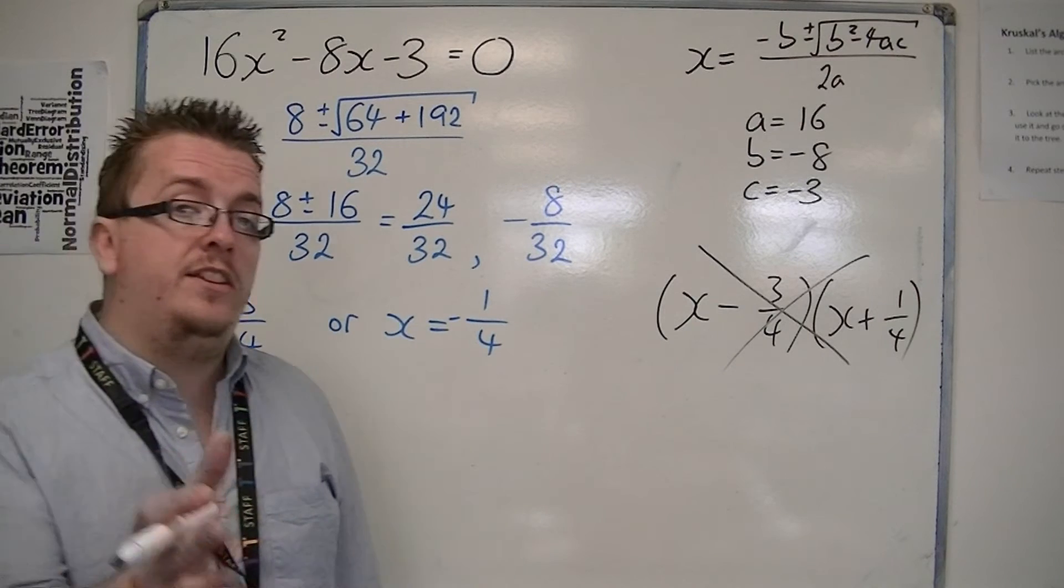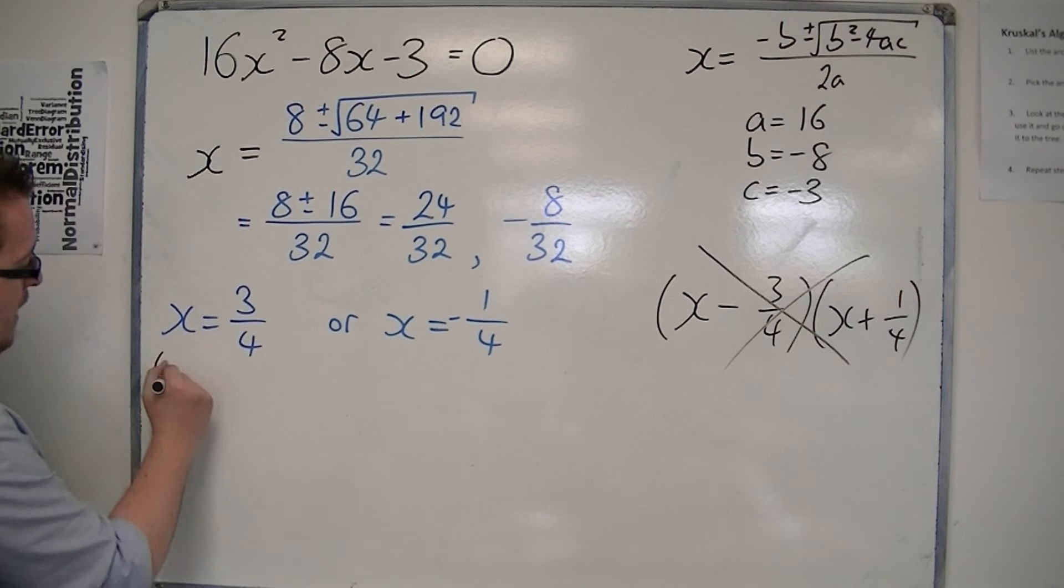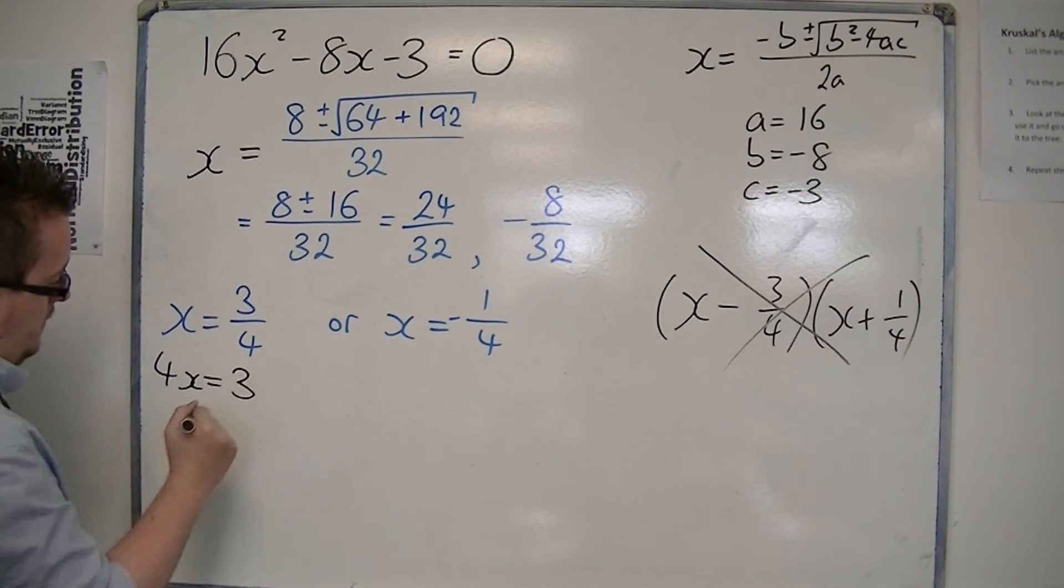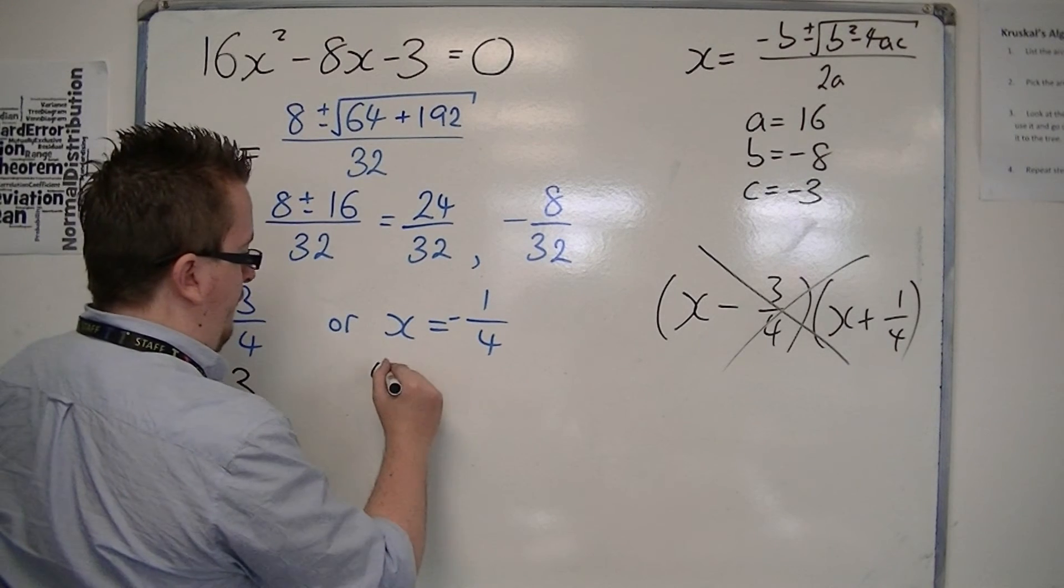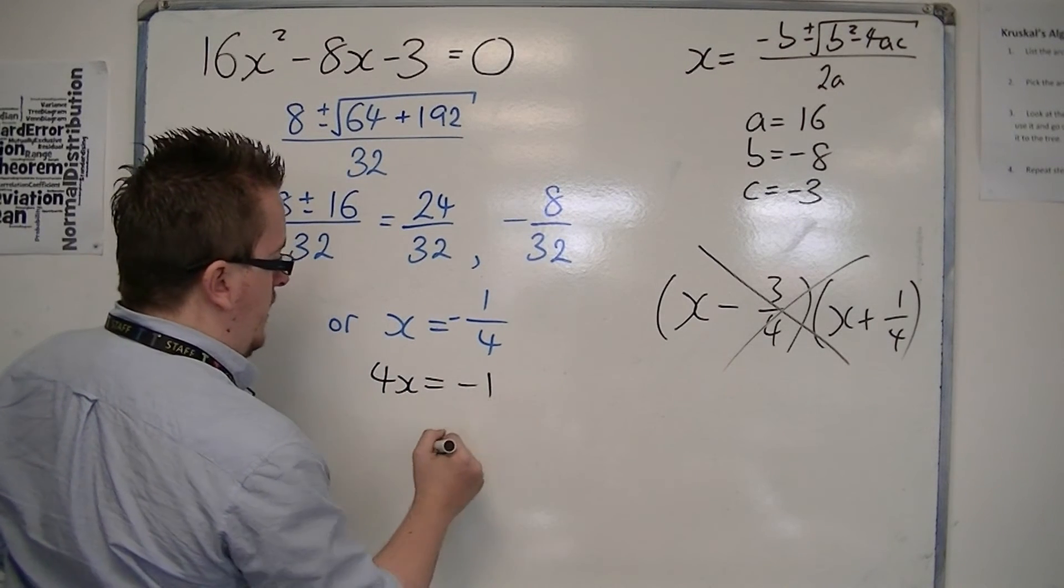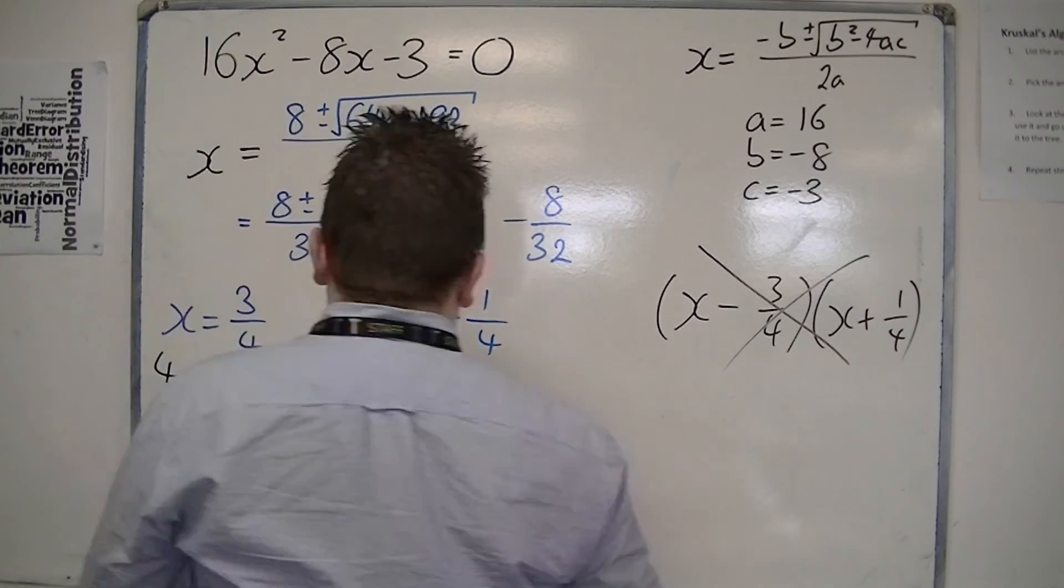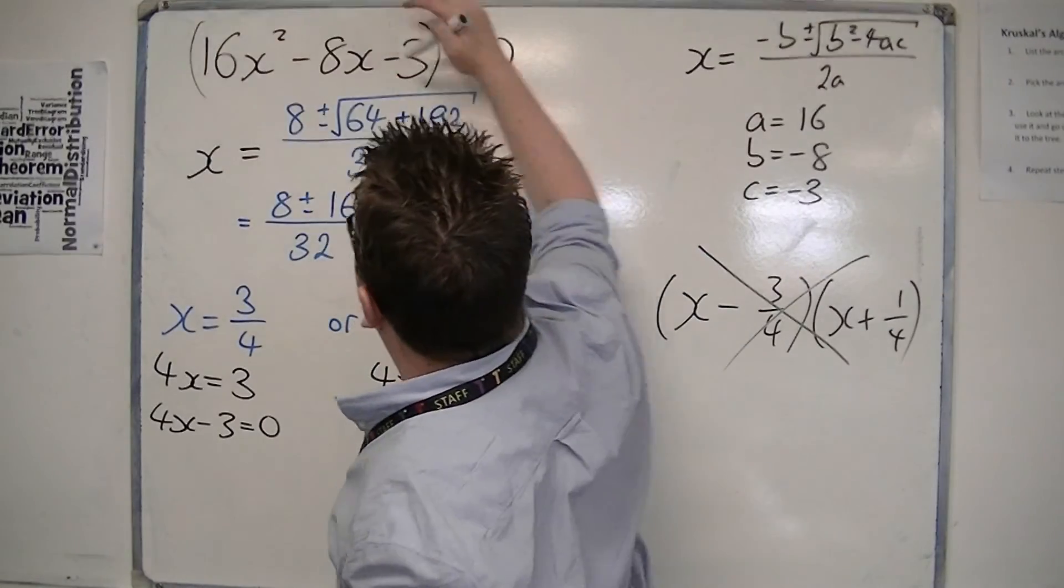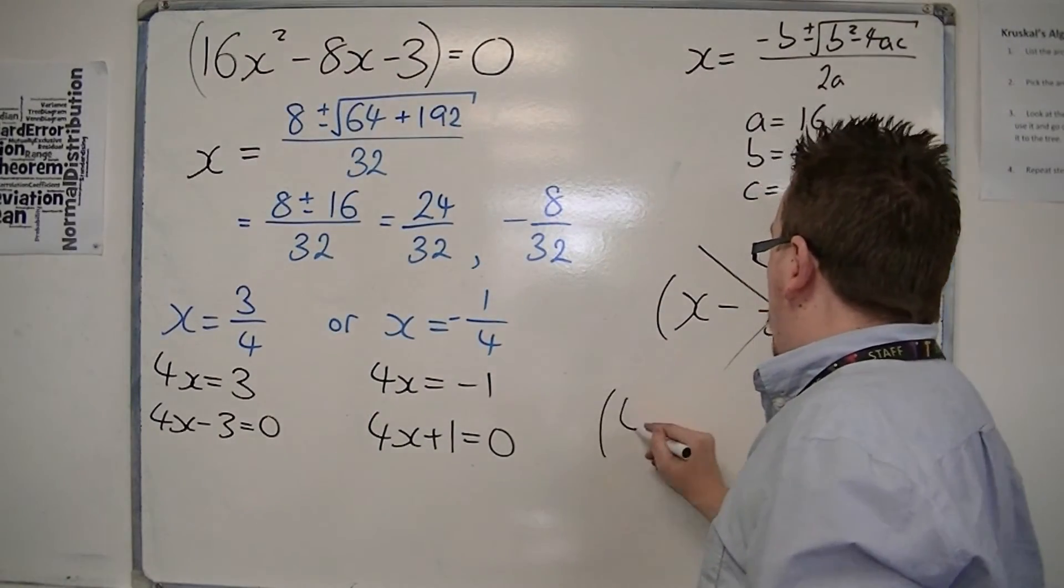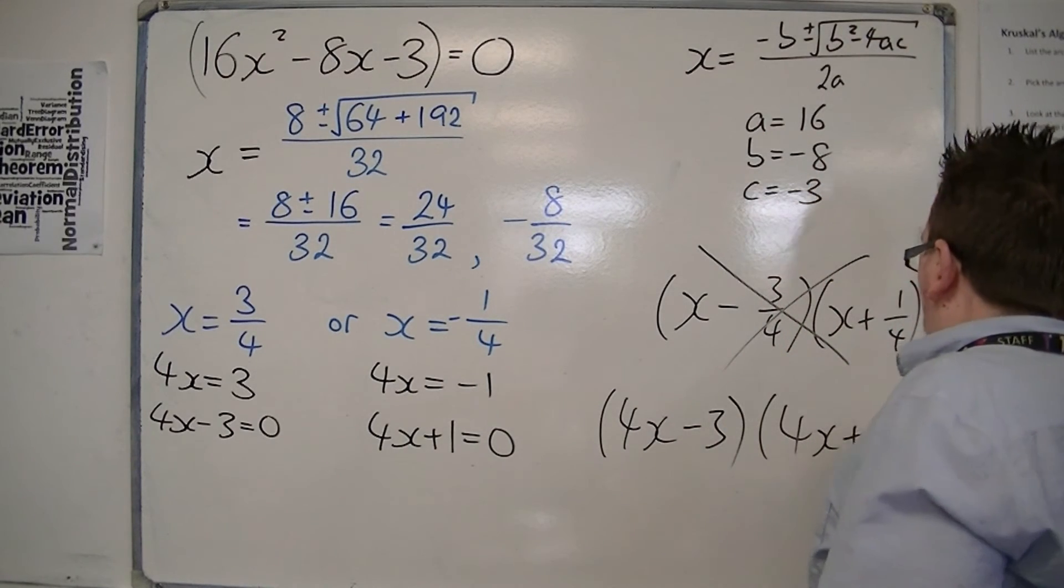What you need to do at this stage would be to multiply through and to rearrange it, so you get 4x is 3, and then take 3 from both sides, so 4x minus 3 is 0, and on this side we can get 4x is minus 1, so 4x plus 1 is 0. So in actual fact this expression here, factorised, would be 4x minus 3, 4x plus 1.